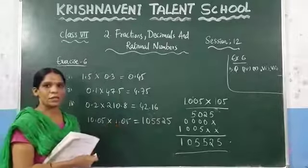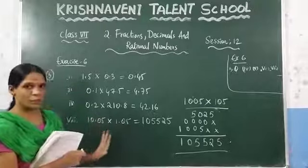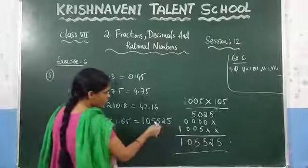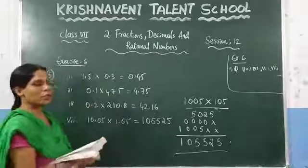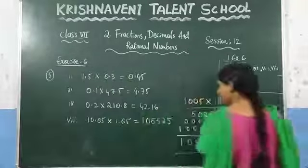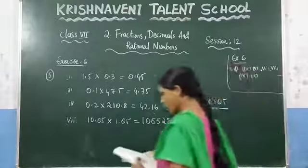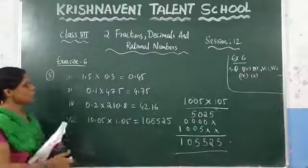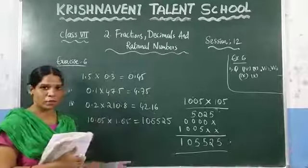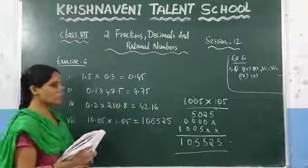Starting from the right, count 4 numbers — 1, 2, 3, 4 — and before that keep the decimal point. Like this you find the product of any 2 decimal numbers. The 9th and 10th questions you can do as homework. To summarize: leave the decimal point, find the product, count how many numbers are after the decimal point, then from the right place the decimal point that many places in.